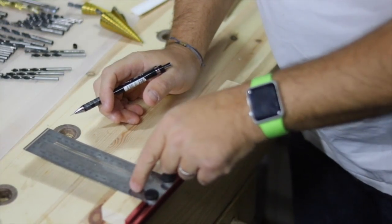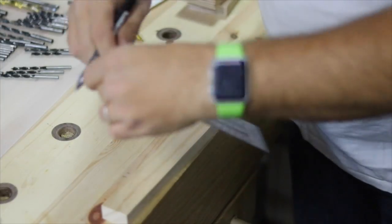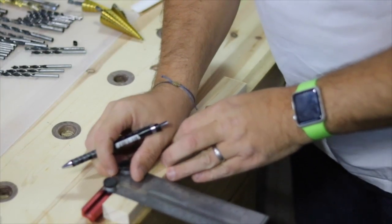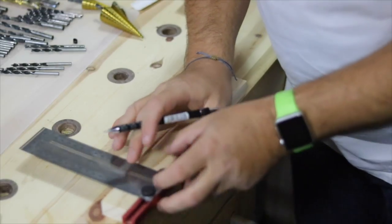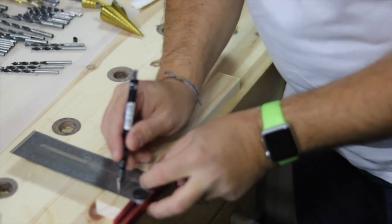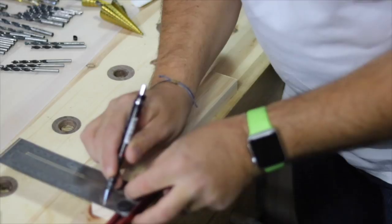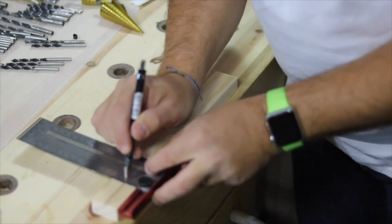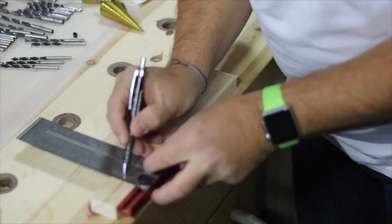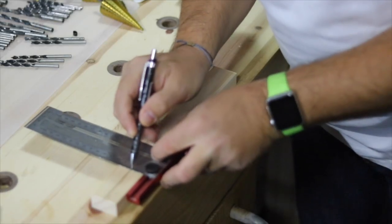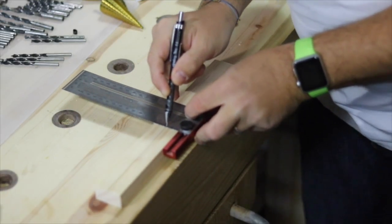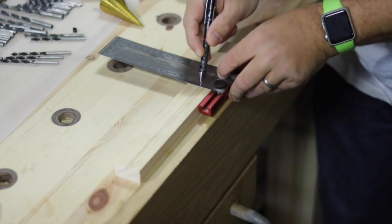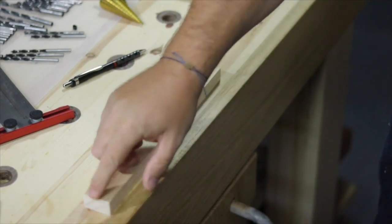So what I did there was just measure the width, marked at 17 mil, flipped it around and checked that the mark was at 17 mil so I know that I've got the center. I don't need it all the way through, but this is going to be the leading edge.